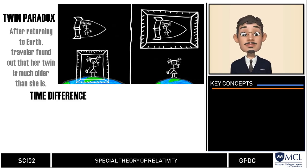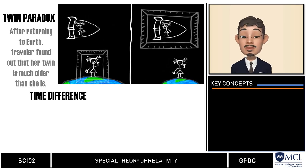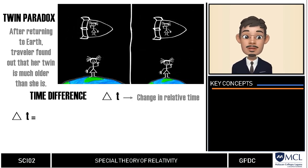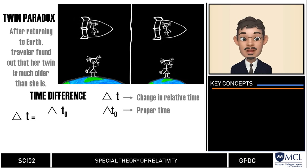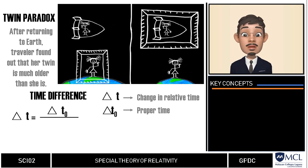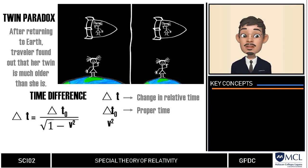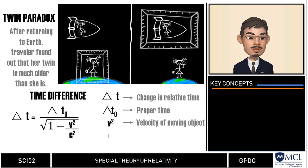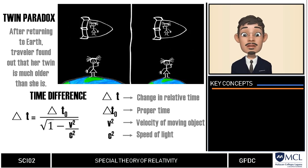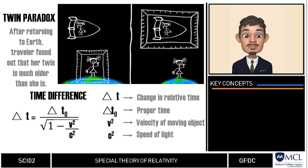The equation for calculating time dilation is: the change in relative time equals the proper time — the time in the observer's own frame of reference — divided by the square root of one minus velocity squared over the speed of light squared. You can notice that the denominator is the Lorentz factor. Remember this formula because we will use it in our worked examples.